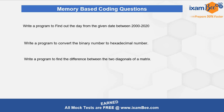The next question was a program to convert a binary number to hexadecimal — a traditional type of program that was very easy. The third program was related to finding the difference between the two diagonals of a matrix, which is also easy and just requires a basic understanding of two-dimensional arrays and matrix concepts.